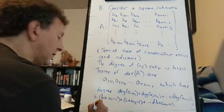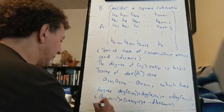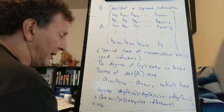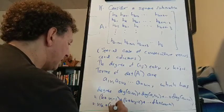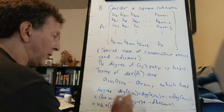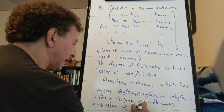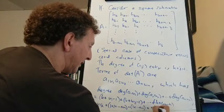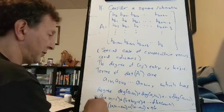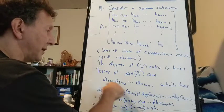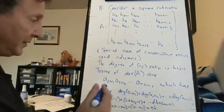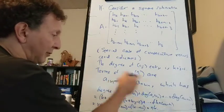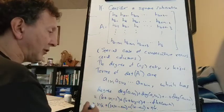That equals NK plus (W1 + W2 + ... + WN) minus (1 + 2 + ... + N). Since W1 through WN are just the numbers 1 through N in some order, those cancel, and we're left with NK. So in the special case of consecutive rows and columns, every term of the determinant has degree NK, and therefore the determinant has degree NK.